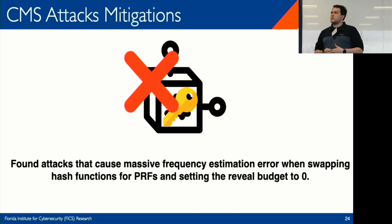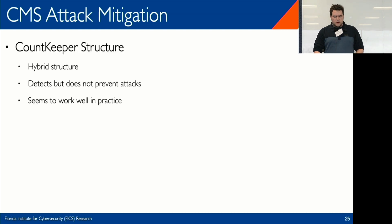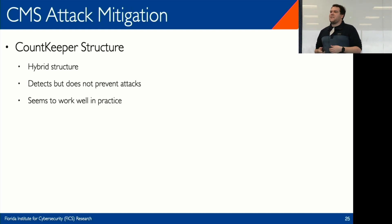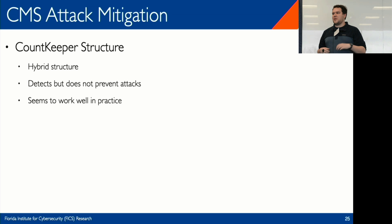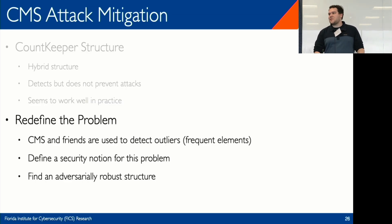Surprisingly, the usual mitigation of swapping hash functions for a keyed primitive did not work. We found attacks that caused massive error even when swapping hash functions for PRFs and setting the reveal budget to zero — blackboxing the structure. It turns out that the query oracle leaks too much information and you can find cover sets just from the responses of the structure. This was slightly surprising and somewhat disappointing.